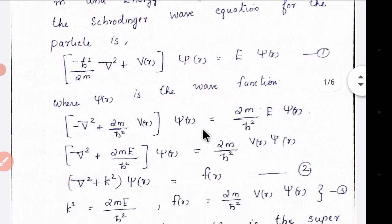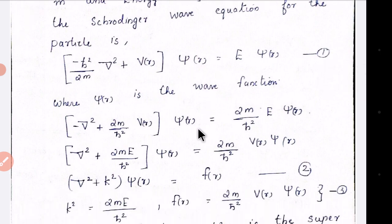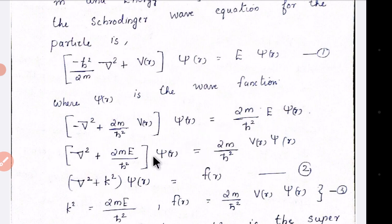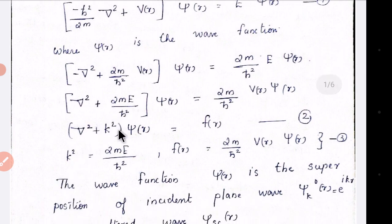Simplifying, we get: minus del-squared plus 2M over H-bar squared times V of R, times psi of R, equal to 2M over H-bar squared times E times psi of R. Rearranging: del-squared plus 2M-E over H-bar squared, times psi of R, equal to 2M over H-bar squared times V of R times psi of R. Setting k-squared equal to 2M-E over H-bar squared, we get: del-squared plus k-squared, times psi of R, equal to f of R. We call this the inhomogeneous equation.